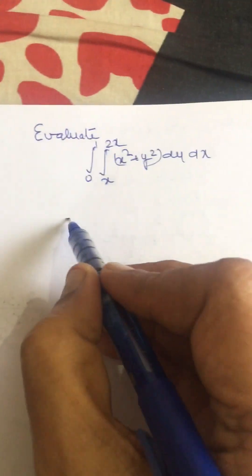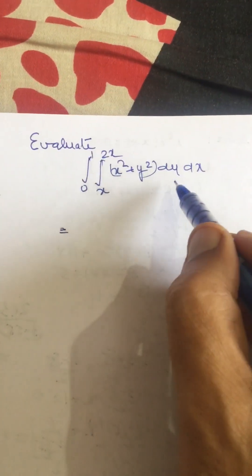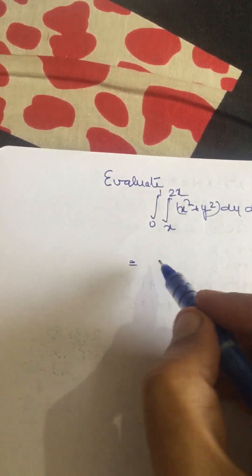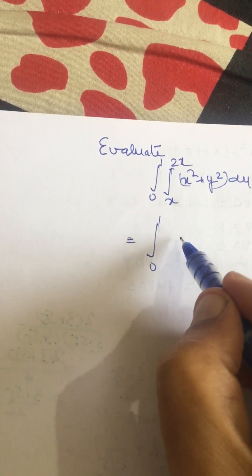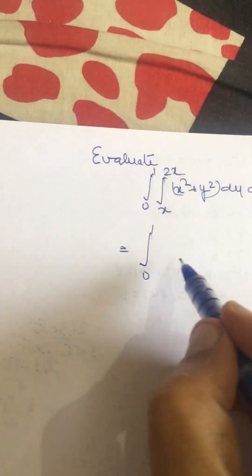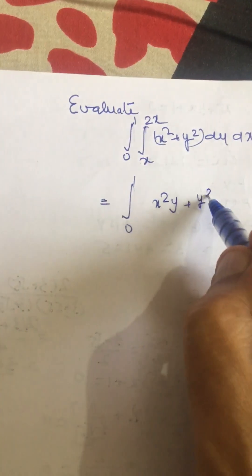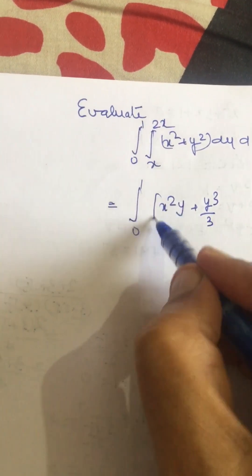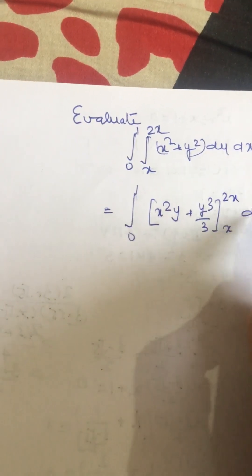We will first evaluate this integral with respect to y. So here dy is appearing first, so we can write this like this. X square when integrated with respect to y will be x square y plus y cube by 3, limits are from x to 2x dx.